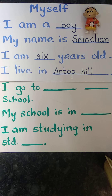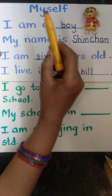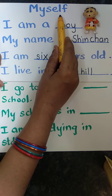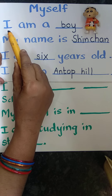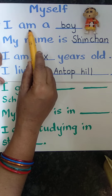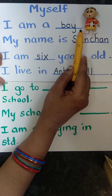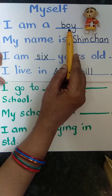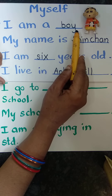Children, yesterday we all wrote 'myself' sentences. M-Y-S-E-L-F, myself. I am a boy. Now if you are a boy, you have written 'boy'. If you are a girl, you wrote 'I am a girl'.